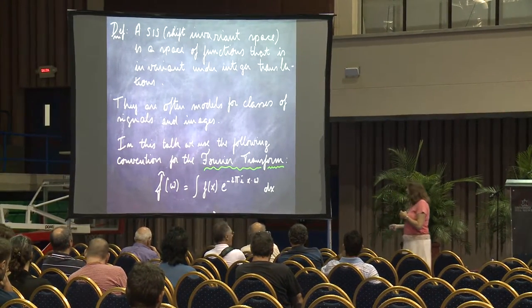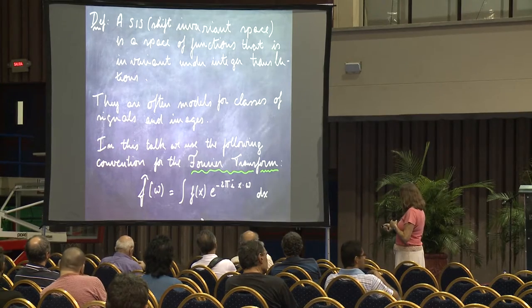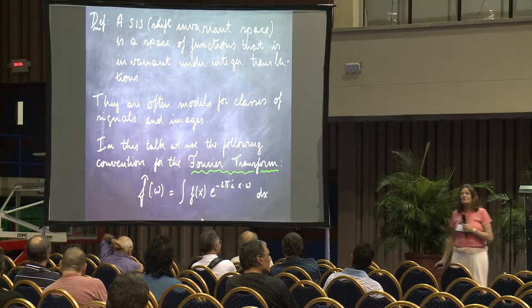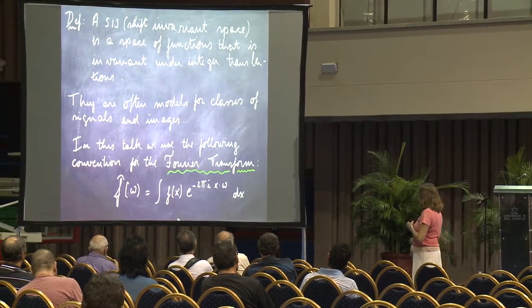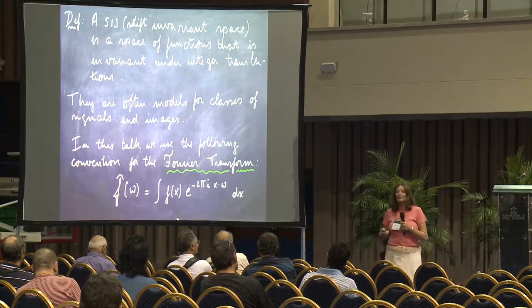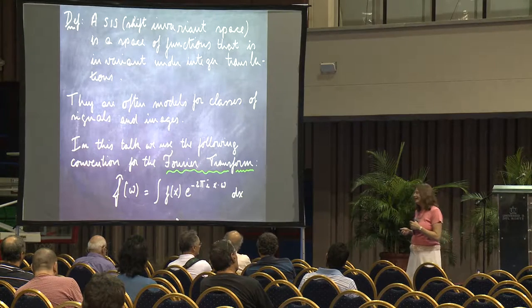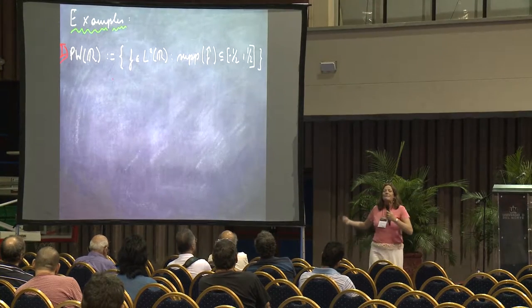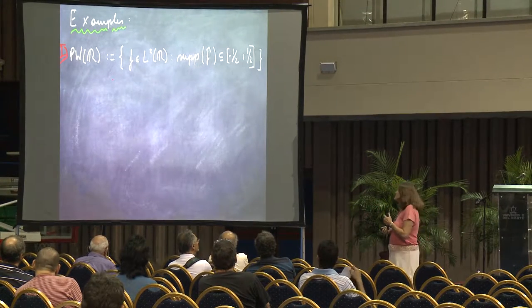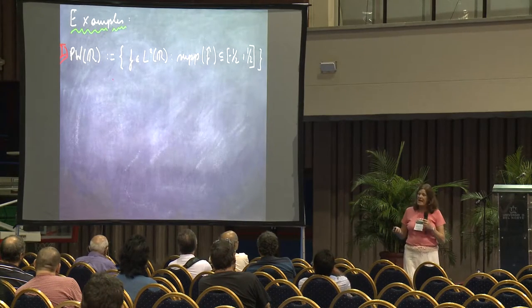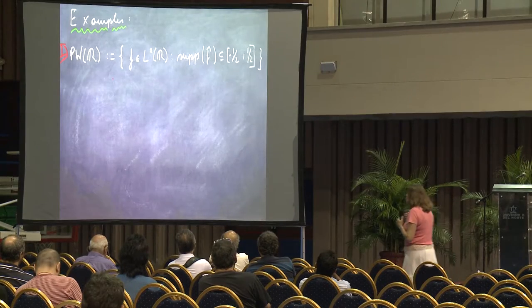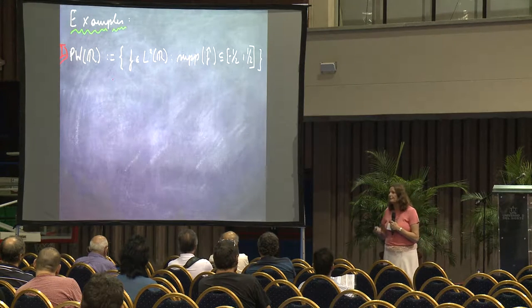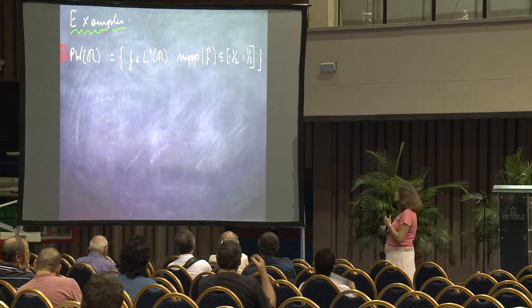Just to show you which group of people I belong to, I use this Fourier transform with the 2π. Other people use it without the 2π and then the Plancherel formula is different, but anything else is the same. The best example of a shift-invariant space is the Paley-Wiener space, which is the space of all functions that are square integrable and whose Fourier transform has support in the interval [−1/2, 1/2].